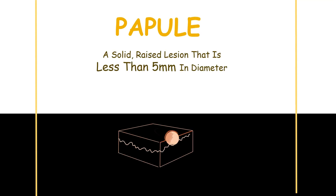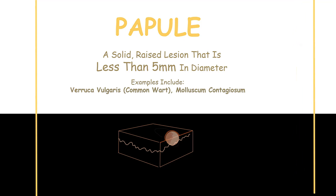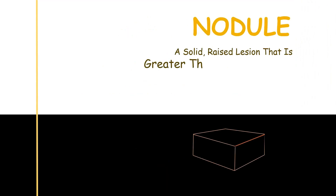A papule is a solid raised lesion that is less than 5 millimeters in diameter. It may have a darker or lighter color as compared to the surrounding tissue. Examples include verruca vulgaris, that is common wart, and molluscum contagiosum.